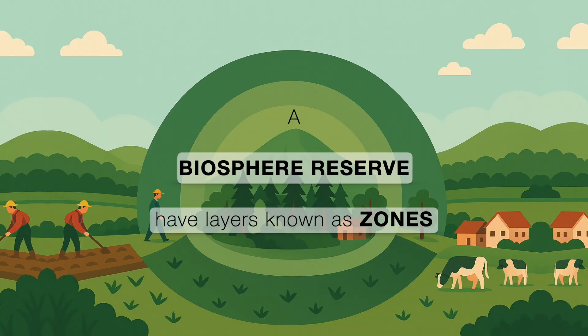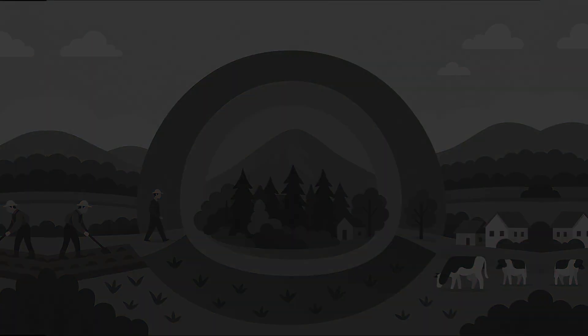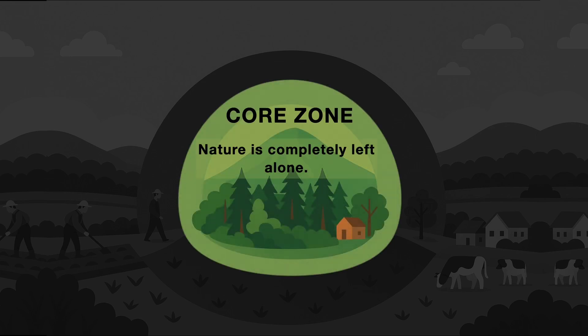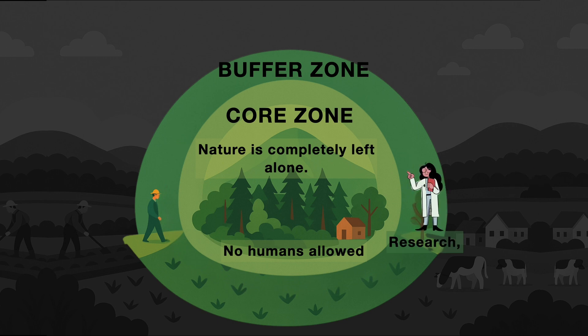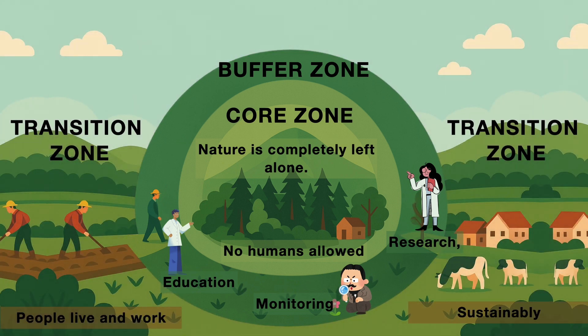Biosphere reserves have layers known as zones — three different zones. At the core zone, nature is left completely alone; no humans allowed. It's an exclusive area for plants and animals to thrive in peace. The buffer zone, outside the core, allows some research, education, and monitoring by scientists, but they must be careful not to harm the environment. Then there is the transition zone, outside the buffer zone, where people live and work sustainably — trying their best not to hurt nature. This design allows biodiversity, culture, and economy to survive and thrive together. It's a pretty intelligent design!